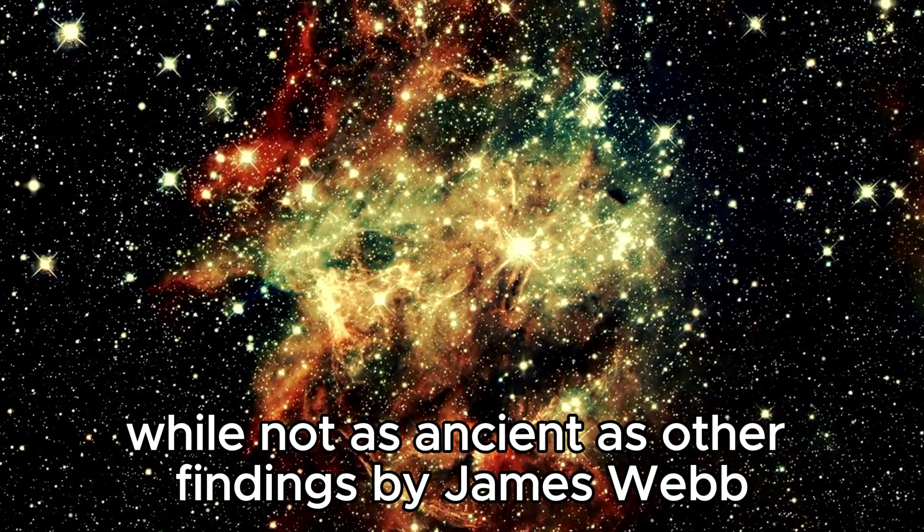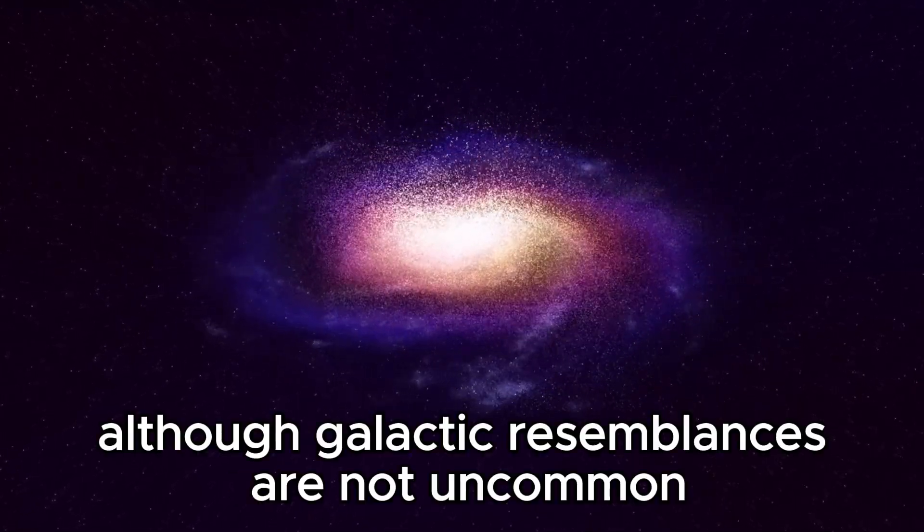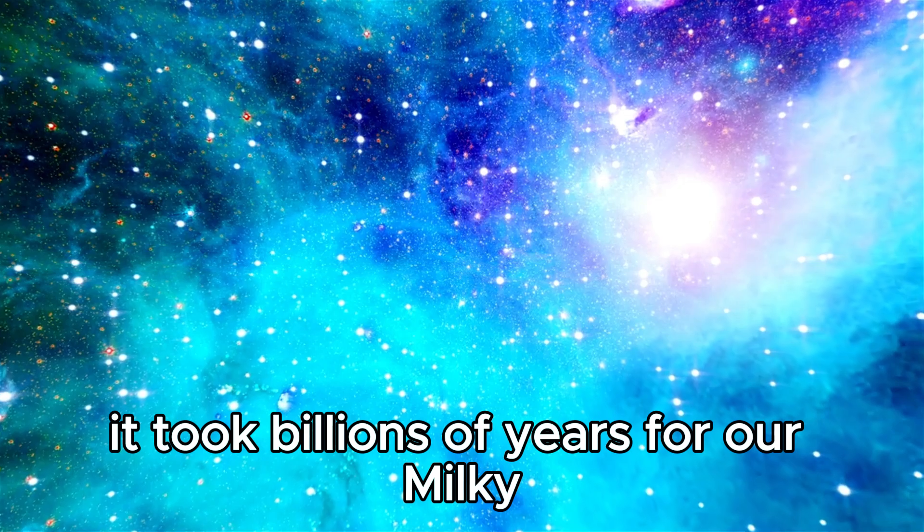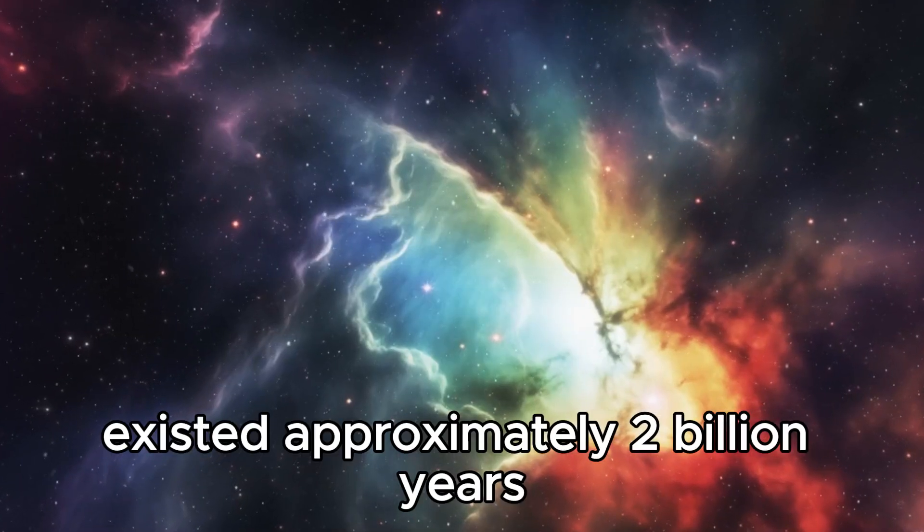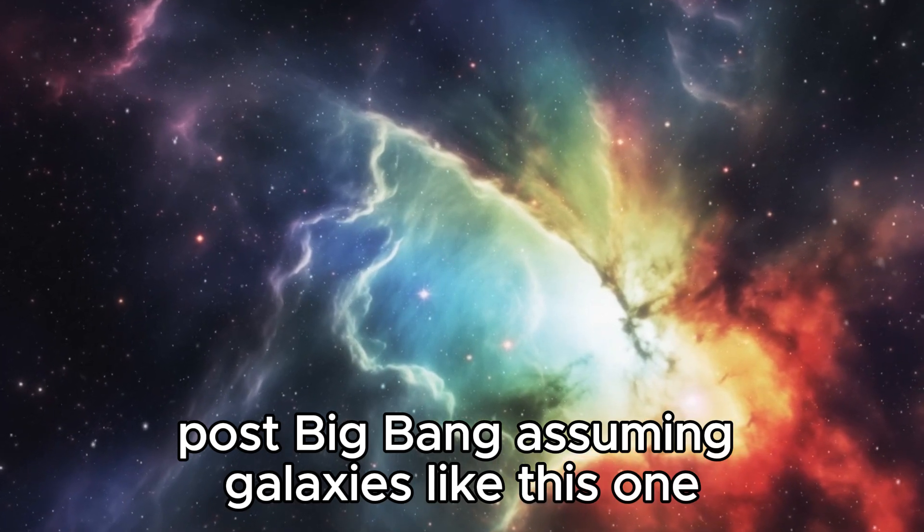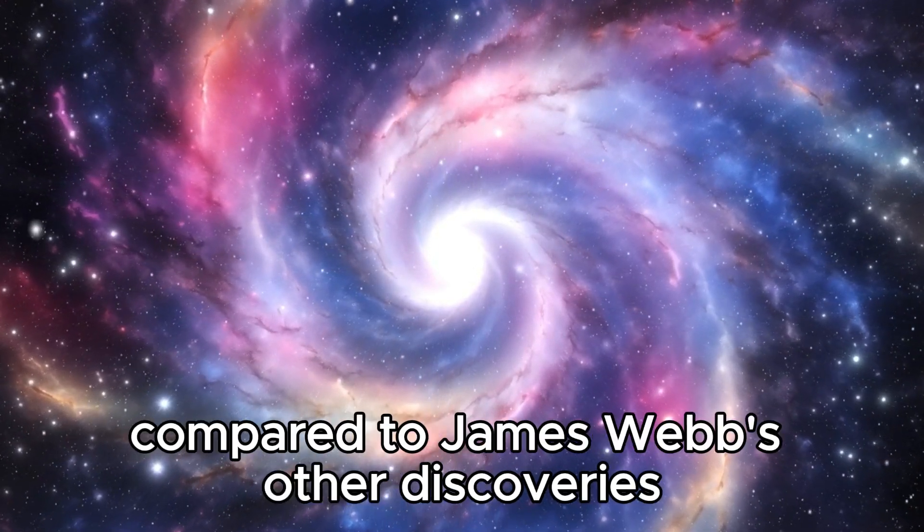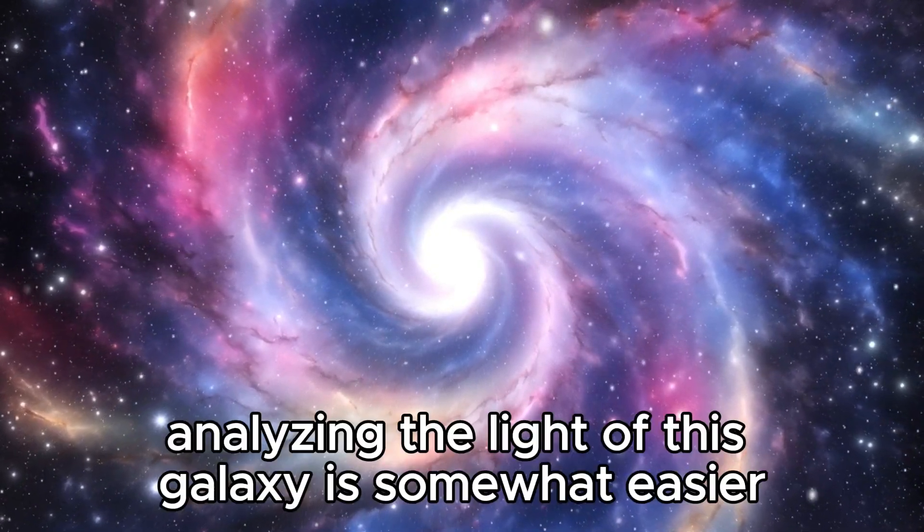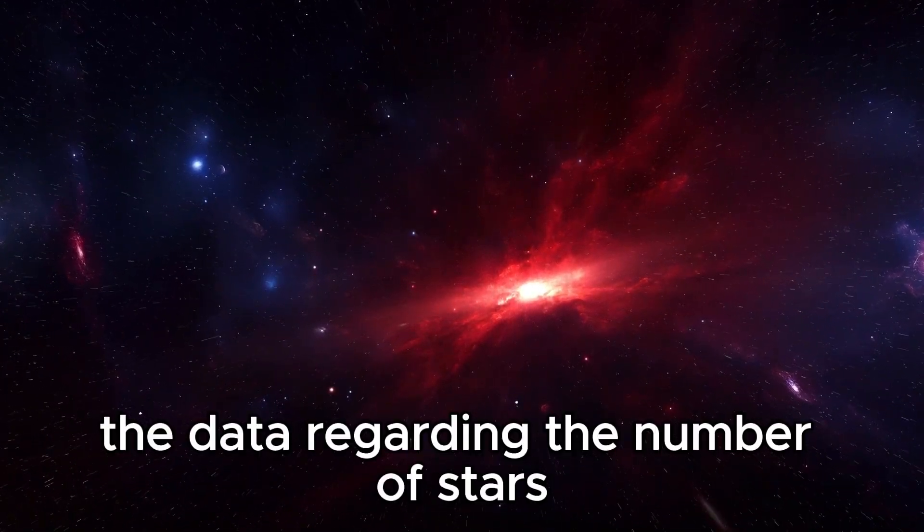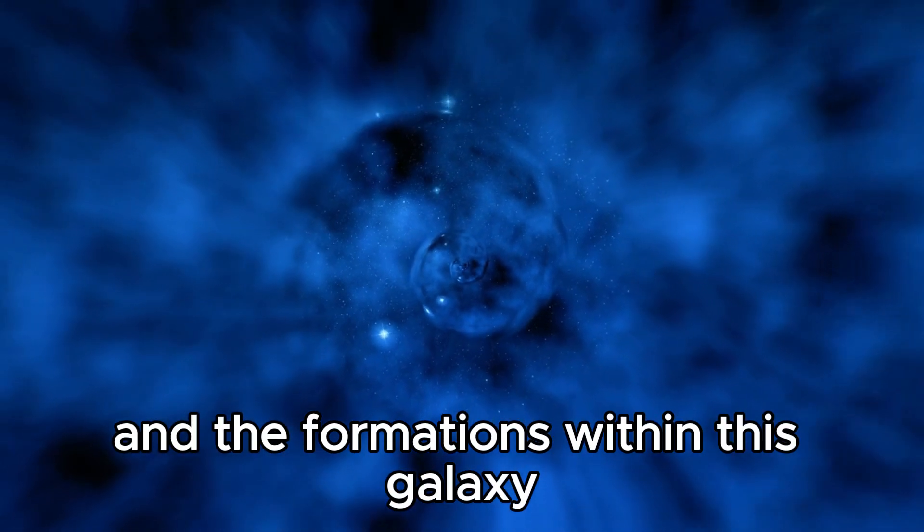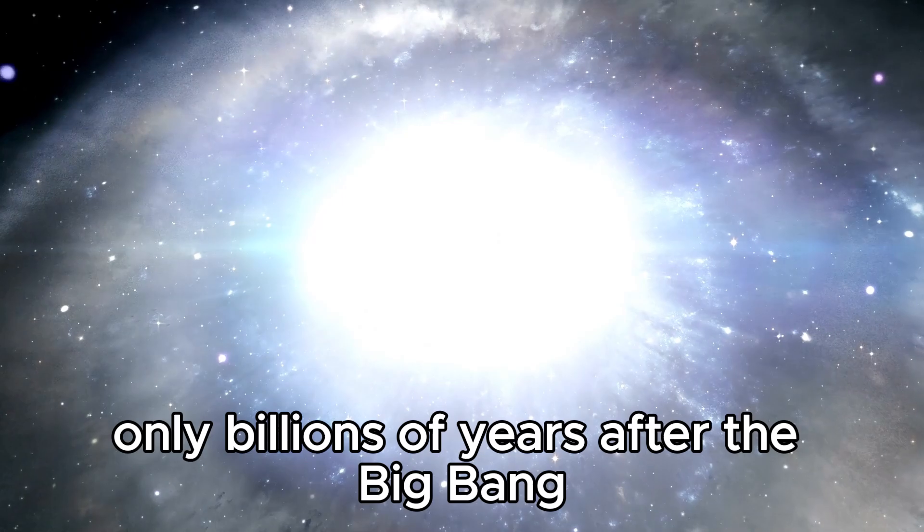While not as ancient as other findings by James Webb, this galaxy, nearly identical to the Milky Way, raises questions about established theories. Although galactic resemblances are not uncommon, it took billions of years for our Milky Way to evolve into a fully formed spiral galaxy. This newfound galaxy existed approximately two billion years post-Big Bang. Assuming galaxies like this one require billions of years to develop, their age stretches beyond the Big Bang. This presents a unique advantage compared to James Webb's other discoveries because of its proximity. Analyzing the light of this galaxy is somewhat easier compared to even older galaxies spotted by Webb. The data regarding the number of stars, their compositions, and the formations within this galaxy are more reliable. They indicate that this galaxy exhibited a level of maturity similar to our Milky Way only billions of years after the Big Bang.